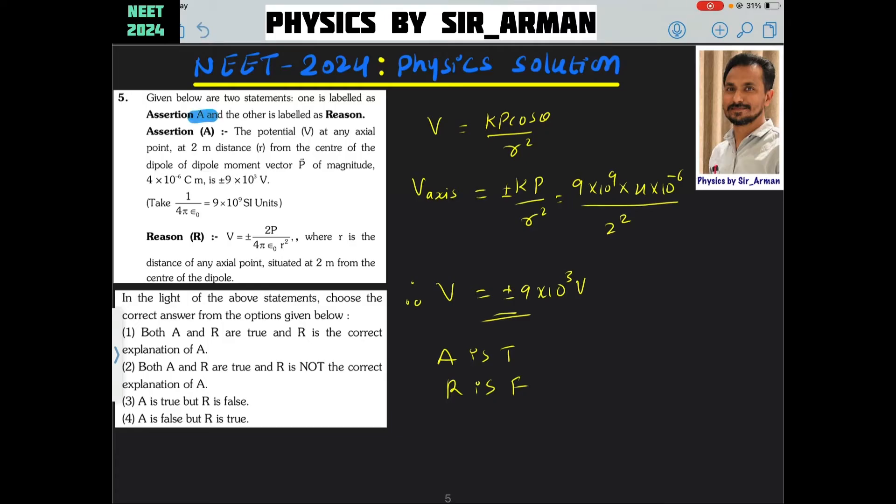The potential V at any axial point at 2 meter distance from the center of the dipole of dipole moment P of magnitude. So dipole moment is given and potential, that is voltage, is given and let us verify that the given voltage is right or wrong.